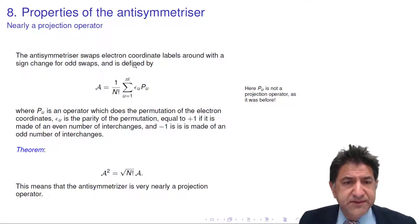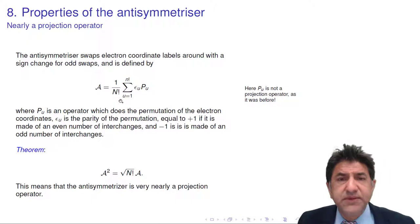So here it is again, the antisymmetrizer A. It swaps electron coordinate labels around with a sign change. It's a normalization factor, which is 1 divided by the square root of n factorial.